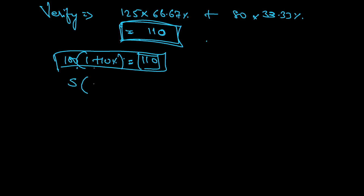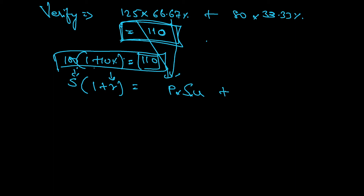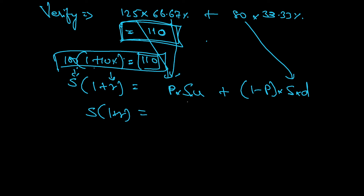Now let's derive the formula. That means stock S times 1 plus r is equal to probability p times stock S times uptick u, plus 1 minus probability times stock S times downtick d. Taking the common factor S outside: S times (1+r) equals S times [p times u plus (1 minus p) times d].